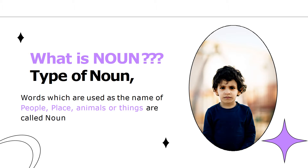So let's learn what is a noun. The words which are used as the name of people, place, animals or things are called nouns. A word that is the name of a thing, an idea, a place or a person is called a noun. For example, water, happiness, jeans and India are all nouns.